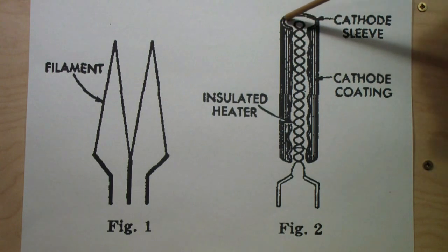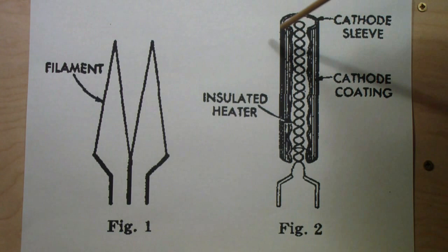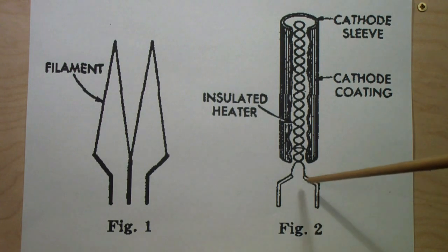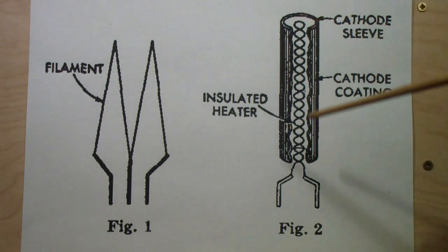They coat a material onto this cathode, put the cathode around the heater, but insulated from the heater. The interesting thing is the voltages on the heater and the cathode can be quite different. That can be an advantage. This is also what is known as an indirectly heated cathode.